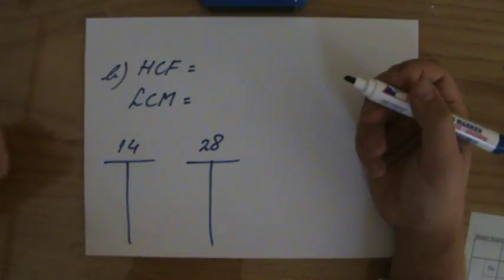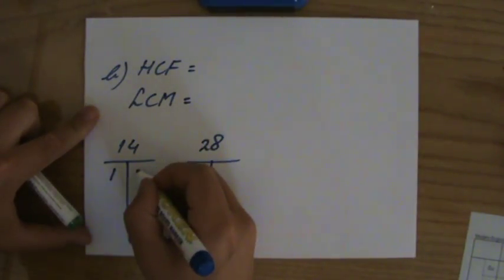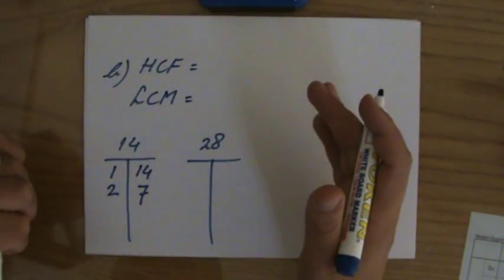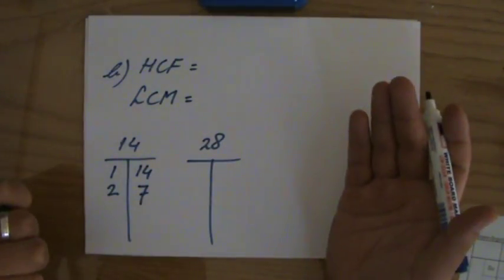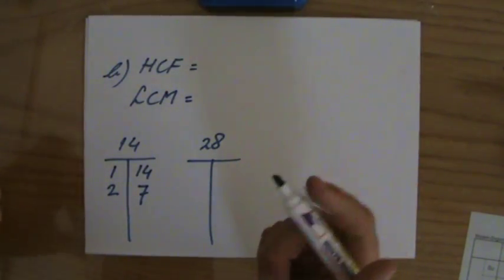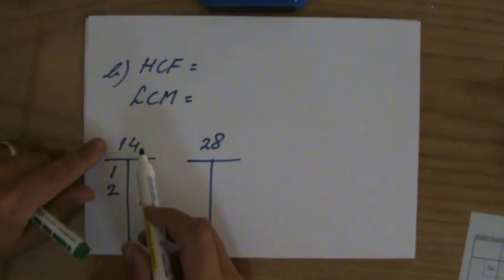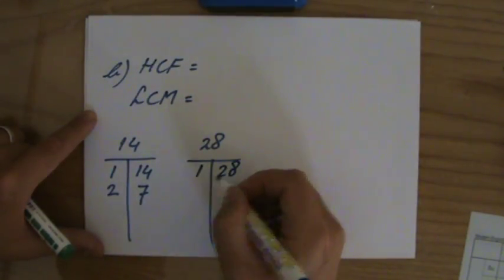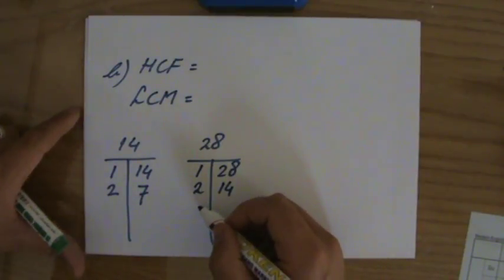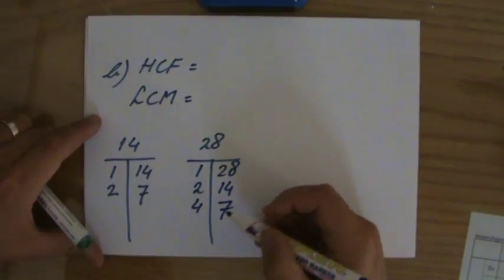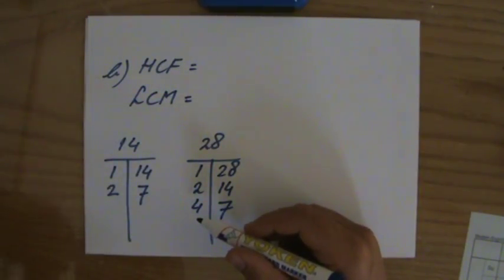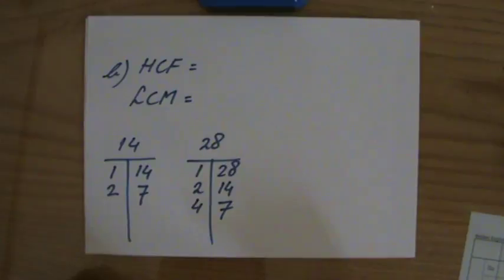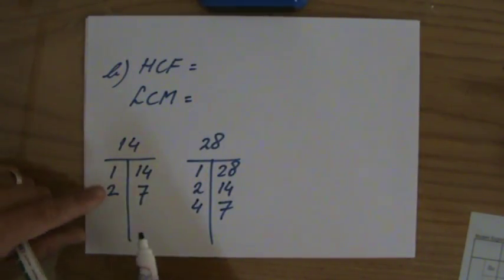Let me write down the factors of 14 and 28 to find the highest common factor. Factors of 14: 1 and 14, 2 and 7, and that's it — so 14 has only 4 factors. Now for 28: 1 times 28, 2 times 14, 3 times nothing, 4 times 7, 5 and 6 times nothing, 7 times 4 — already have that — so 28 has 6 factors.